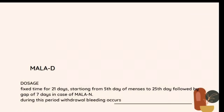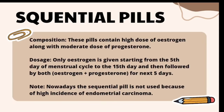The next type is the sequential pill, which contains high doses of estrogen along with moderate doses of progesterone. Only estrogen is given from the 5th to the 15th day of the menstrual cycle, followed by both estrogen and progesterone for the next five days.